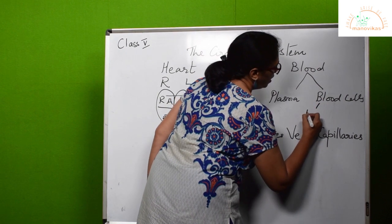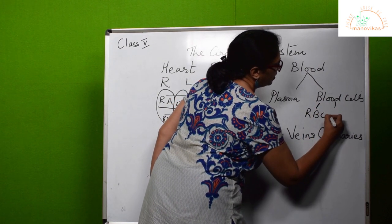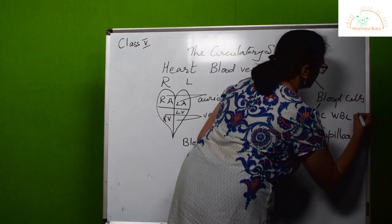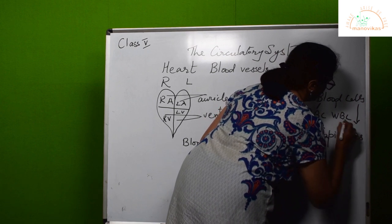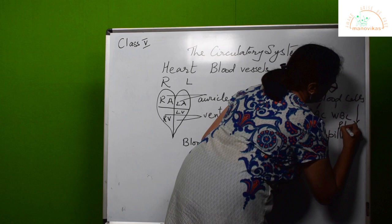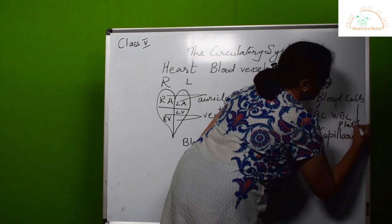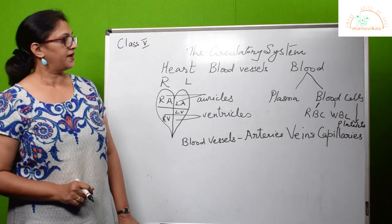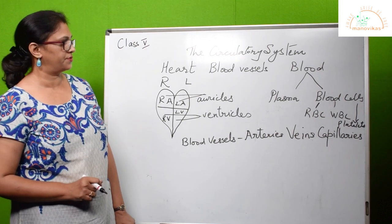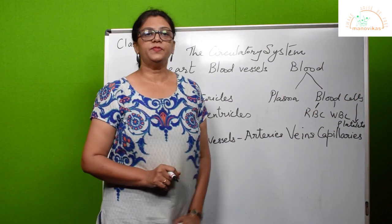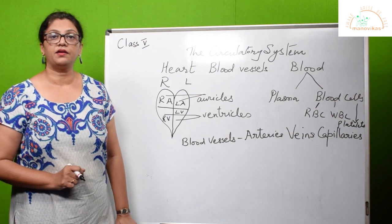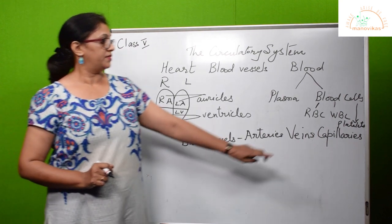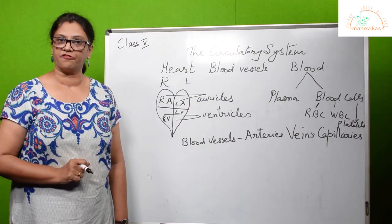Blood cells are of three types: RBCs, WBCs, and platelets. RBCs are red blood cells — they are the carriers of oxygen. WBCs are white blood cells — they are responsible to fight infection and germs in our body.